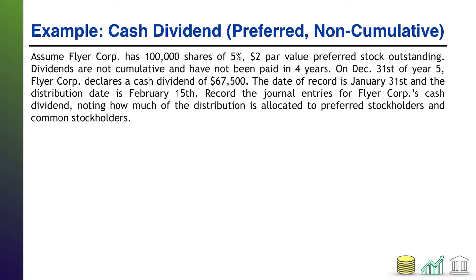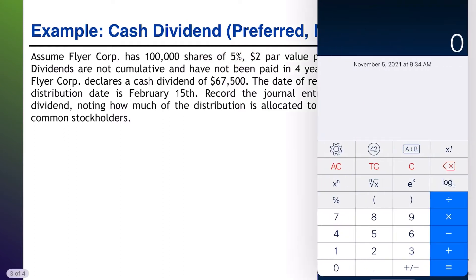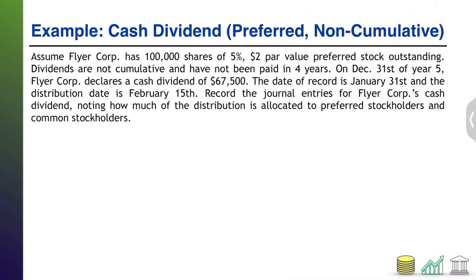Let's walk through this piece by piece. We have 100,000 shares of 5%, $2 par value preferred stock outstanding. The key question is what dividend do the preferred stockholders actually get? Their stock is worth $2 par, and they are entitled to a 5% dividend on that $2 par. So $2 times 0.05 equals $0.10 per share — I'll note this off to the side as it's part of the calculation, not the final answer. The preferred dividend is $0.10 per share.